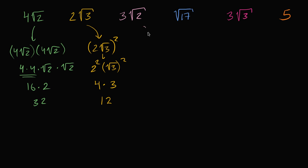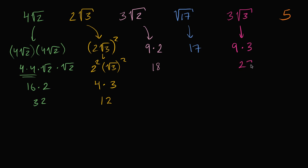What is three square roots of two squared? That's three squared, which is nine, times the square root of two squared, which is two. Nine times two is 18. What's the square root of 17 squared? That's just 17. What is three square roots of three squared? That's three squared, which is nine, times the square root of three squared, which is three. Nine times three is 27. And five squared is simply 25.